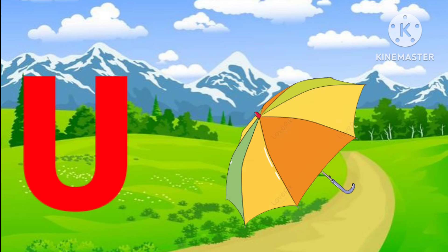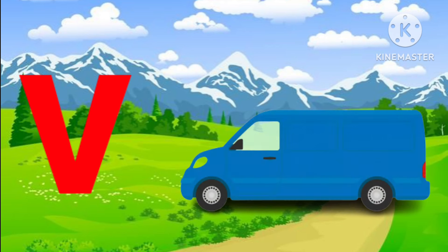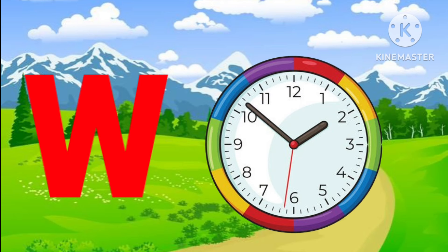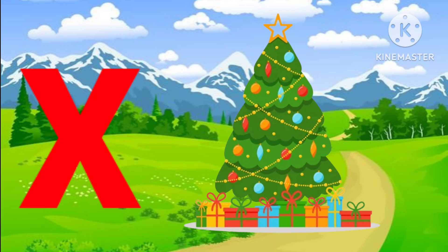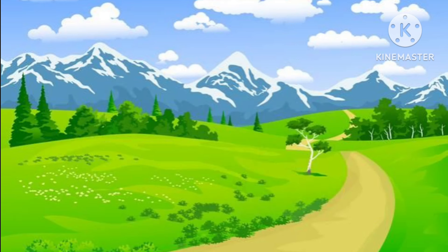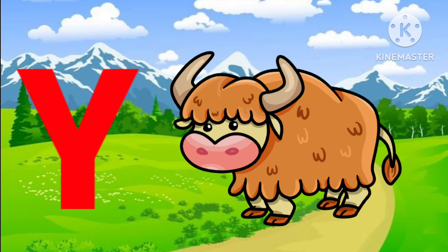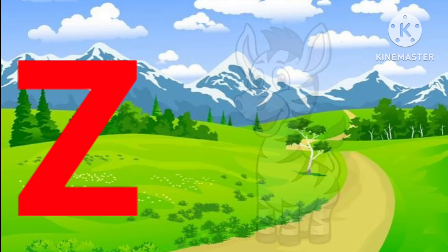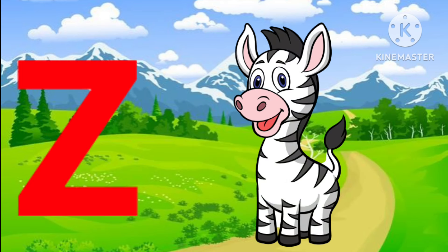U for umbrella, V for van, W for watch, X for xylophone, Y for yak, Z for zebra.